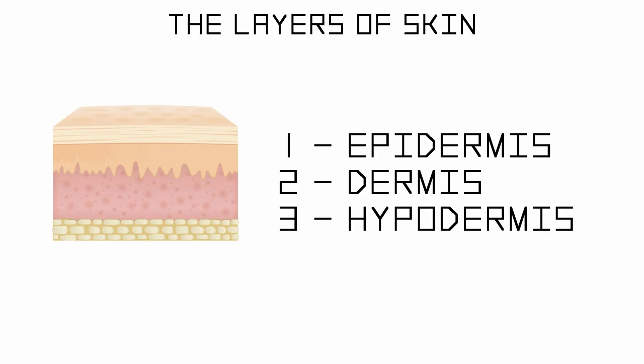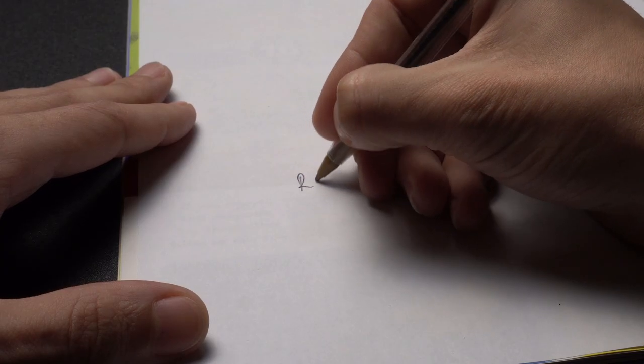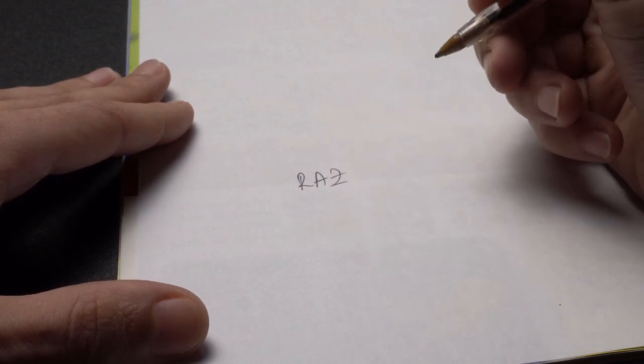Our goal as tattooists is to hit the second layer of the skin which is the dermis. And in order to learn how to do that I want you to grab a piece of paper and a pen and write down your name three times.